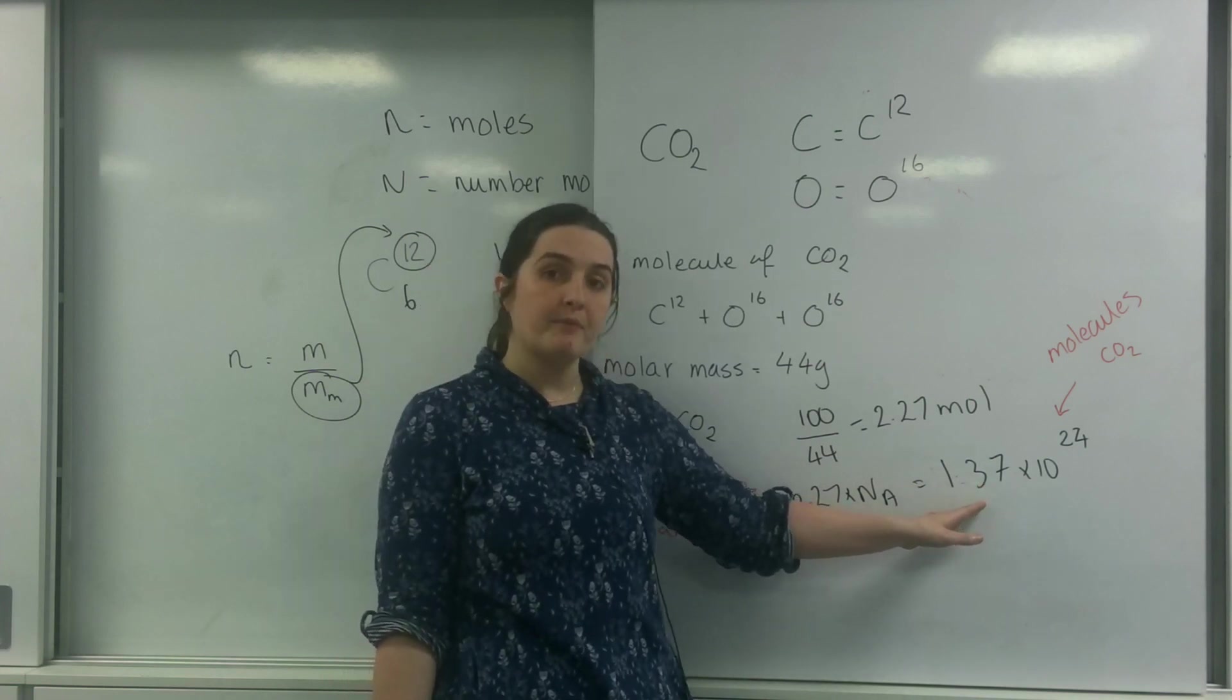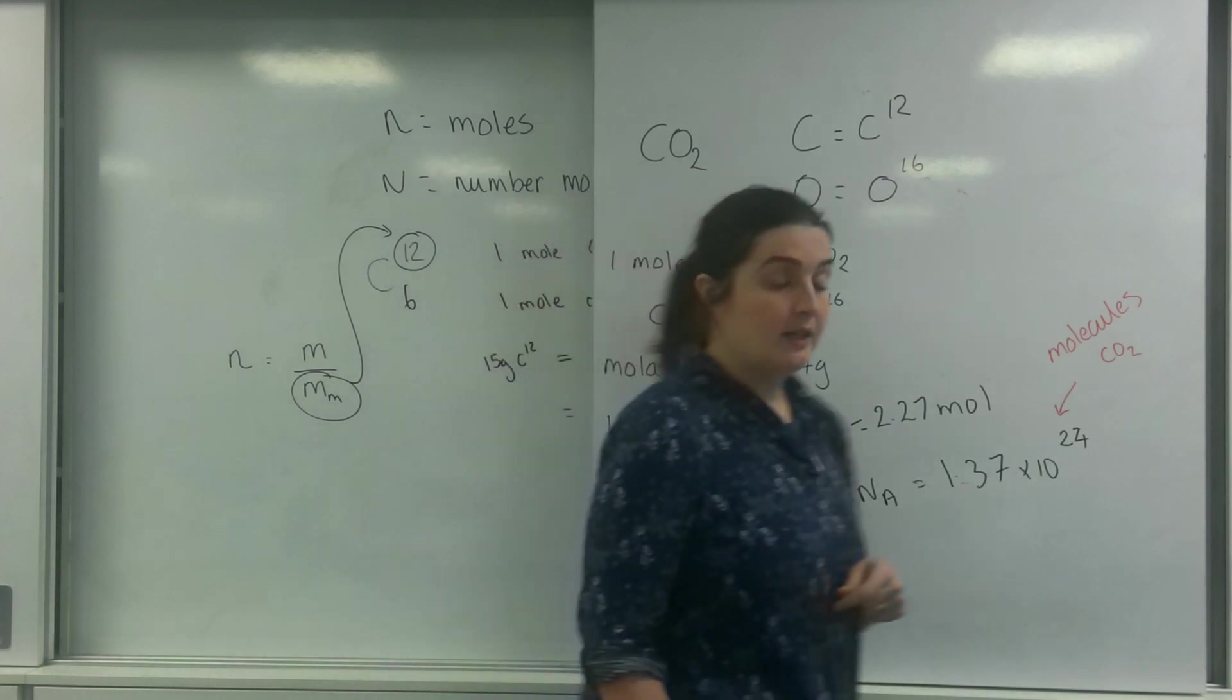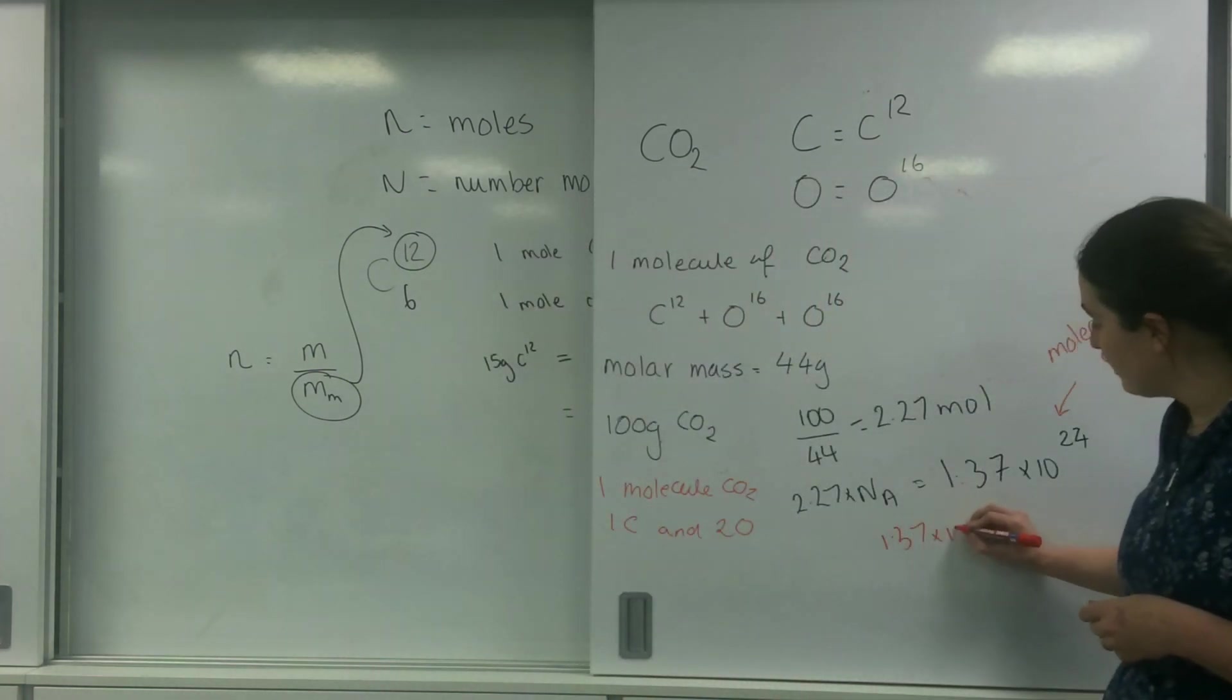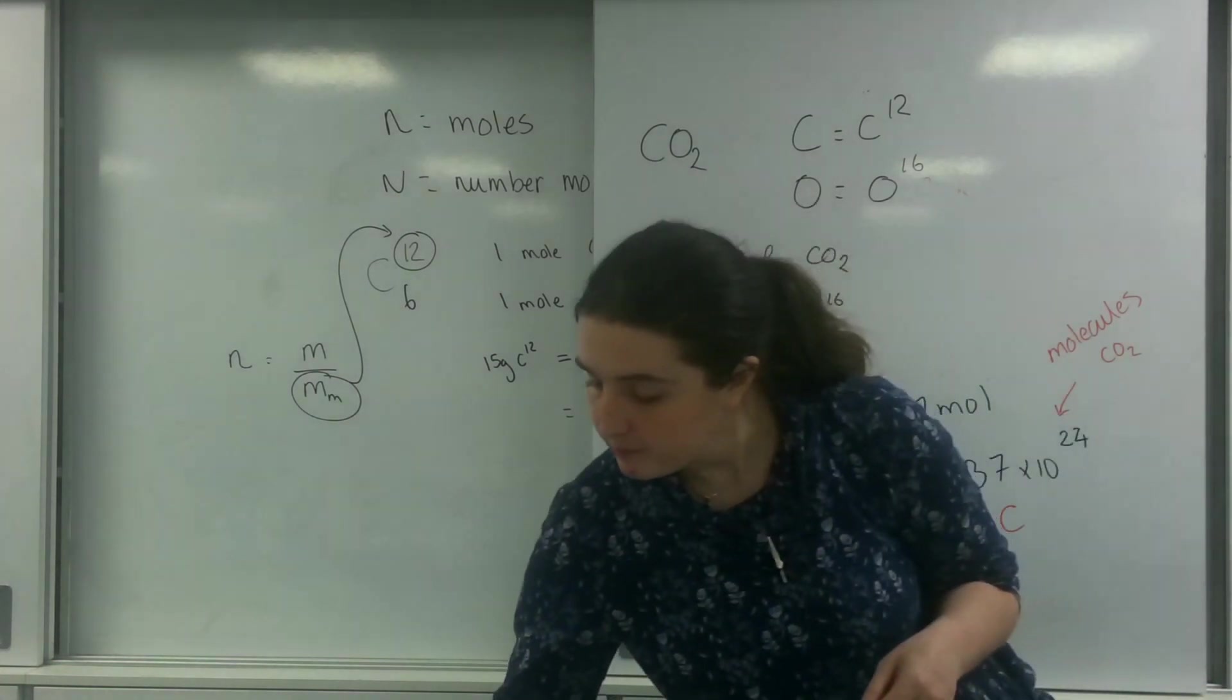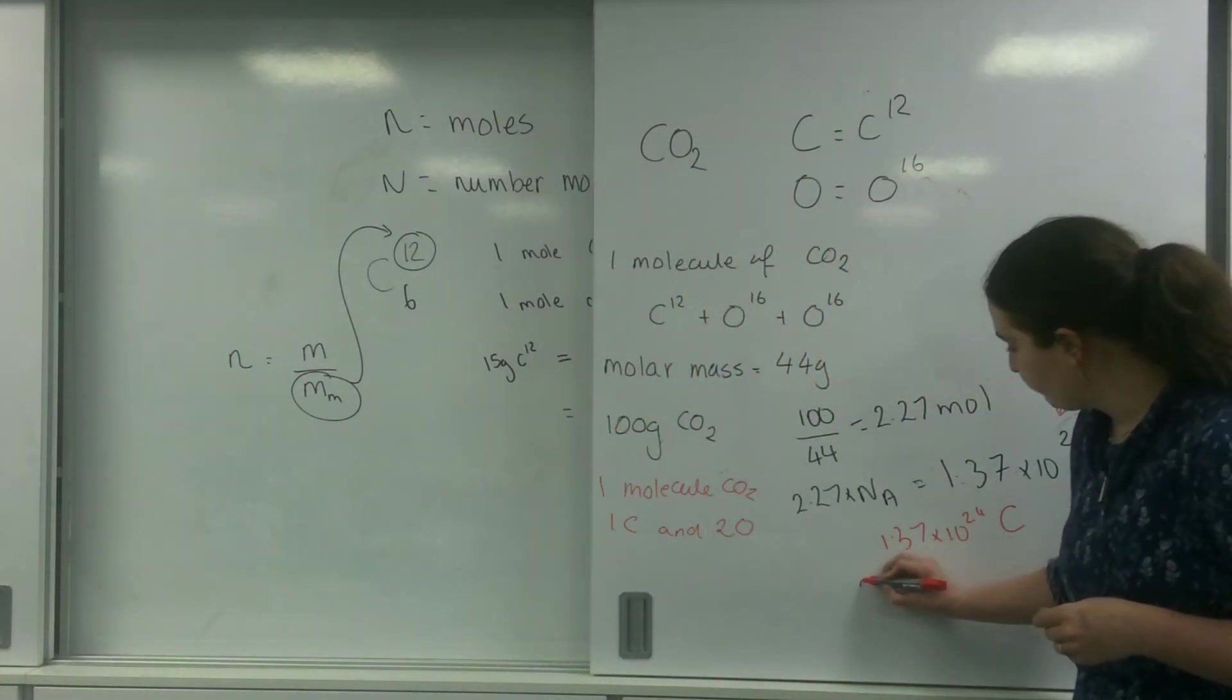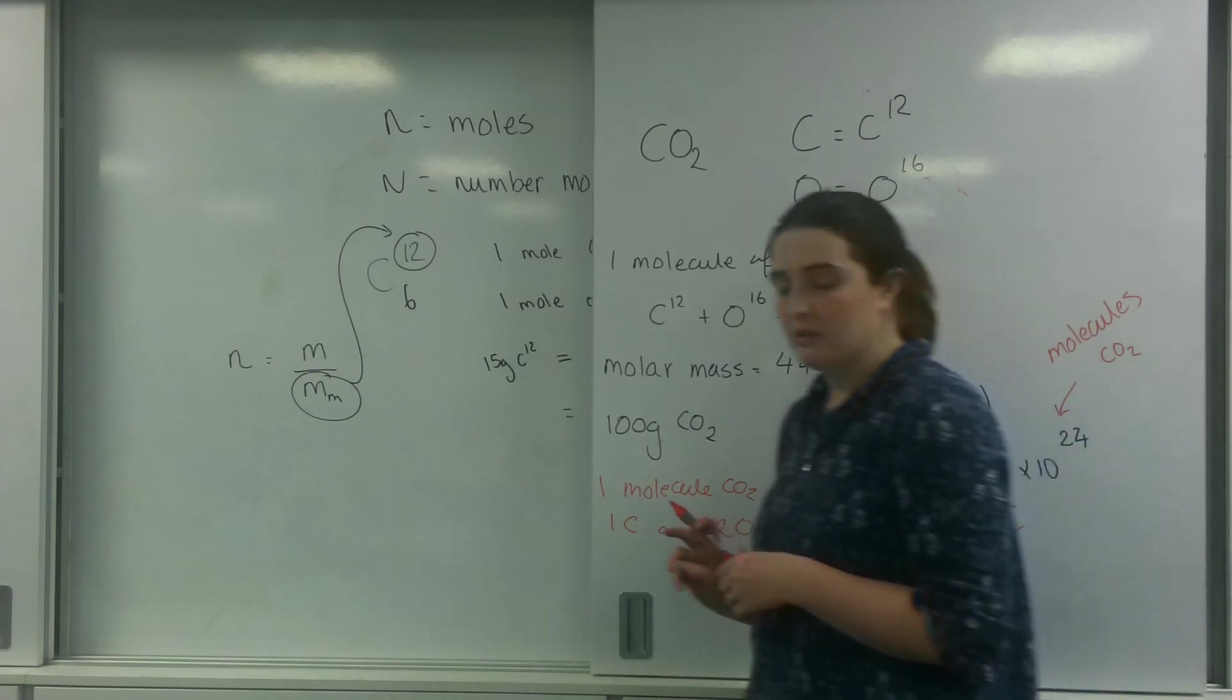If I double that, that will give me how many atoms of oxygen I have. So I know that I've got 1.37 times 10 to the 24 carbons. And if I times that by two, 2.74 times 10 to the 24 oxygens.